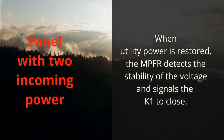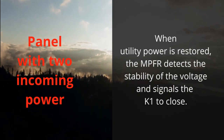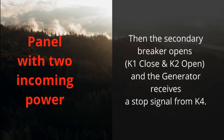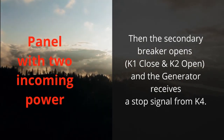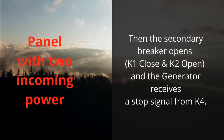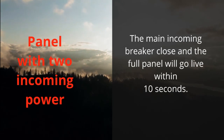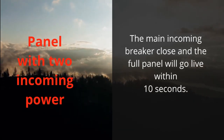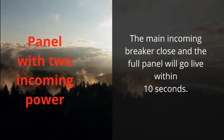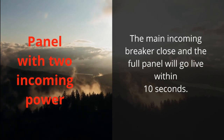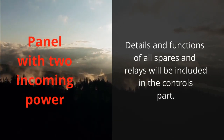When utility power is restored, the MPFR detects the stability of the voltage and signals K1 to close. Then the secondary breaker opens and the generator receives a stop signal from K4. The main incoming breaker closes and the full panel will go live within 10 seconds. Details and functions of all spares and relays will be included in the controls part.